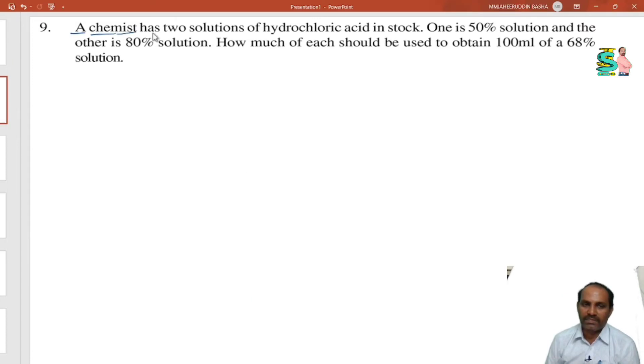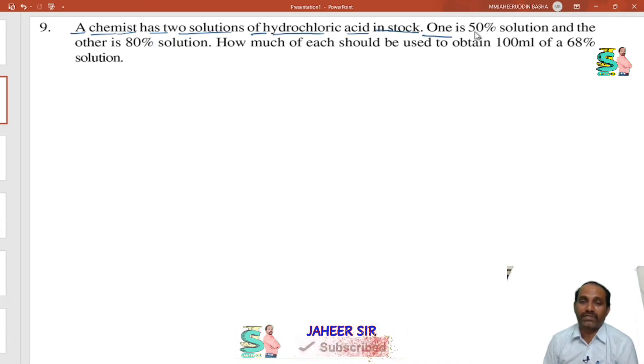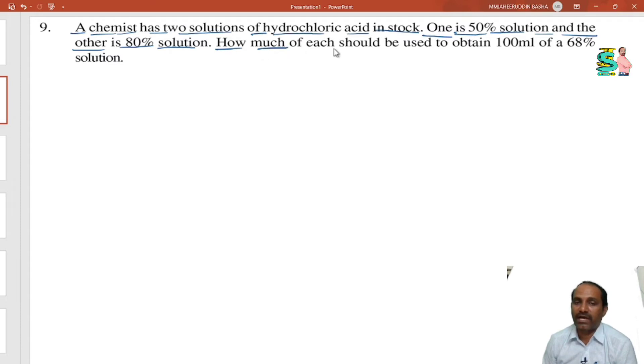A chemist has two solutions of hydrochloric acid in stock. One, two solutions are there in which one is 50 percent solution and the other is 80 percent solution. Now, how much of each should be used to obtain 100 ml of 68 percent solution?